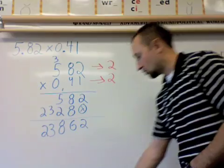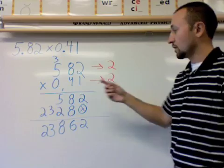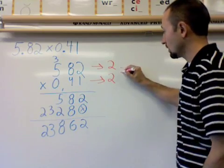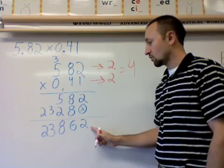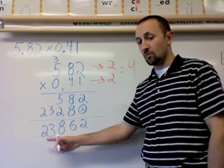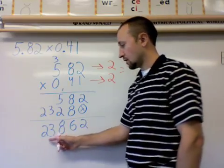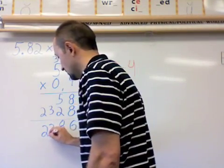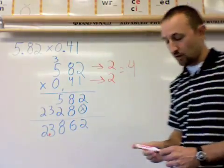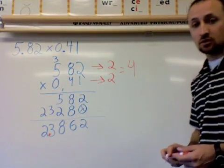Now for the final step, like I told you before. We move the decimal places two here and two here for a total of four. So beginning with the end of the number, I'm going to move over four places and put my decimal there. So let's count: one, two, three. That's the fourth spot. Nice big red decimal right there. So my answer is two point three eight six two.